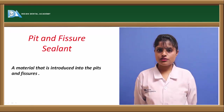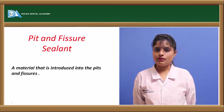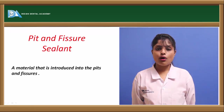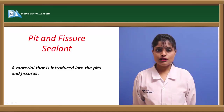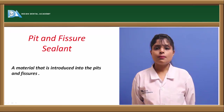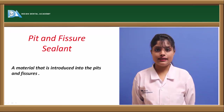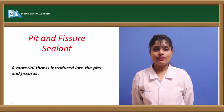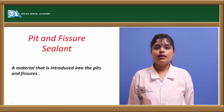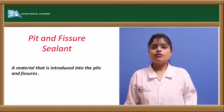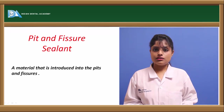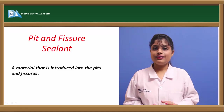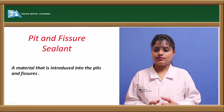The occlusal surfaces of the enamel constitute about 10% of all the surfaces. But amazingly, the pit and fissure caries account for at least 50% of all the caries incidents.